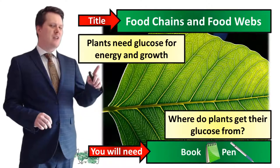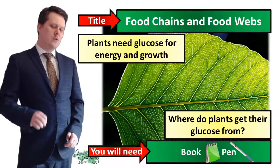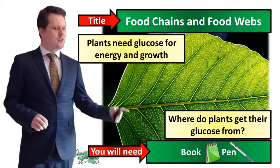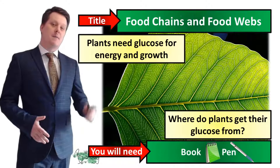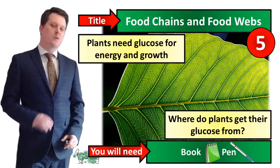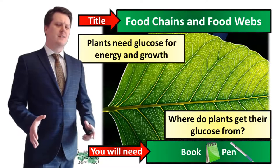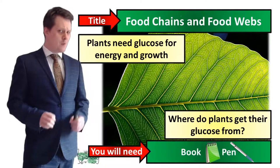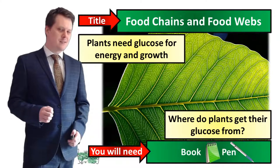We are starting today's lesson with a statement: plants need glucose for energy and growth. For your starter activity, suggest where do plants get their glucose from. Plants get their glucose from a process called photosynthesis, and we're going to look at that in a bit more detail in today's lesson.